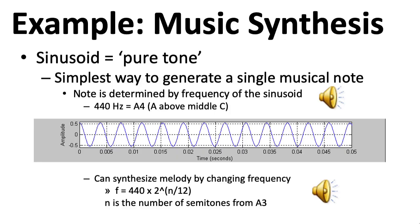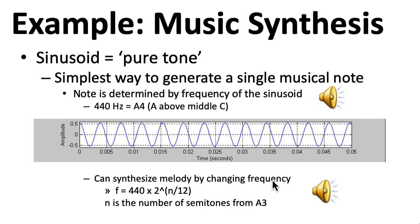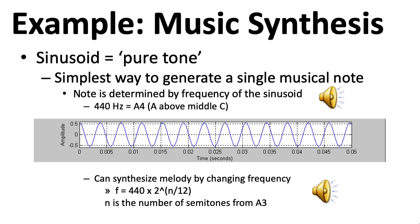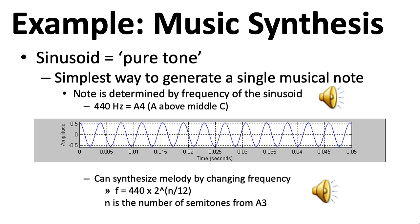You have most assuredly heard the digital signal processing algorithm known as auto-tune, for better or for worse. Here's an example of a pure sinusoid at 440 Hz — this is the note A above middle C. Now we're going to change the frequency of the sinusoid in order to play a scale. The reason it sounds grating is that pure sinusoids don't naturally occur acoustically. You can create them with a tuning fork, but that requires some work, so we're not used to hearing individual sinusoids.